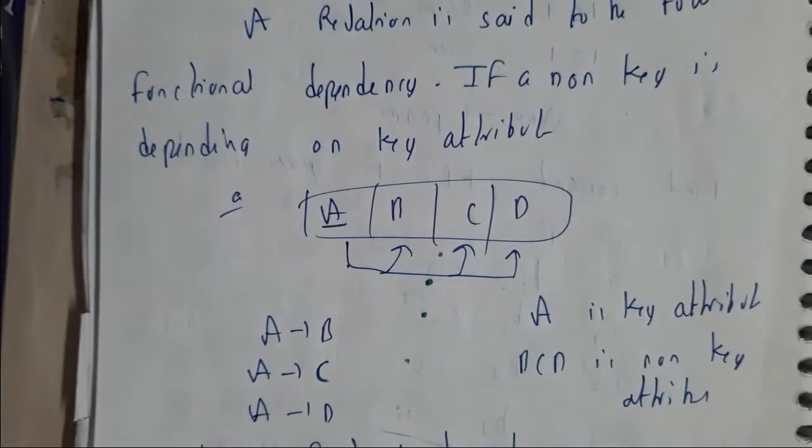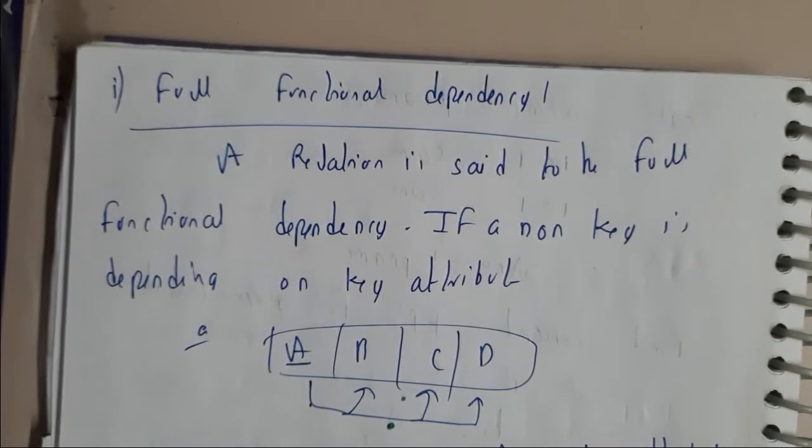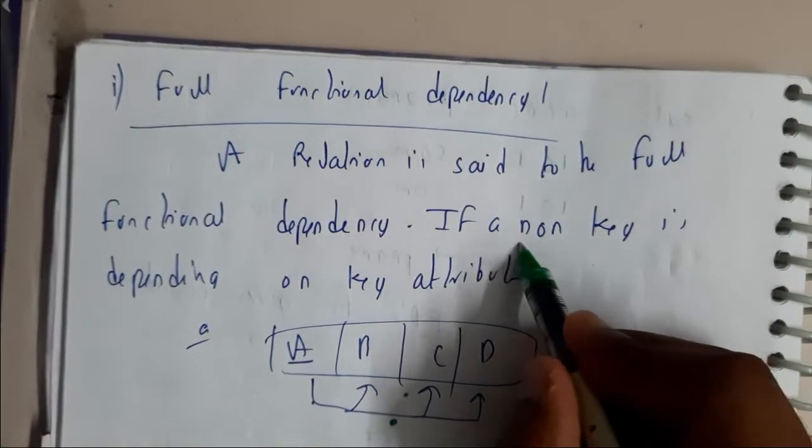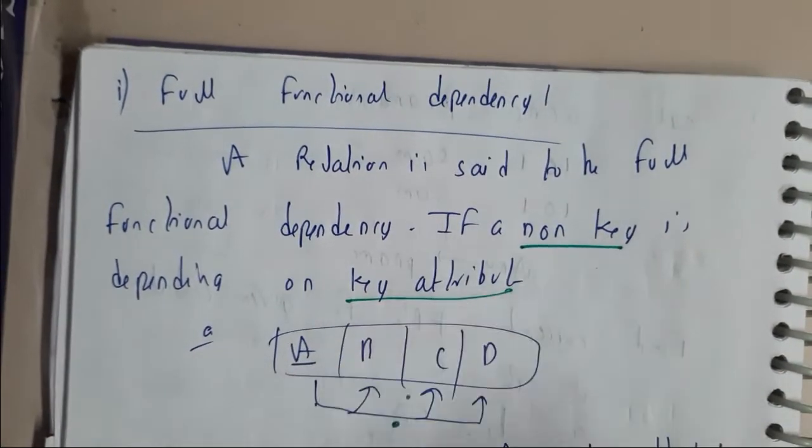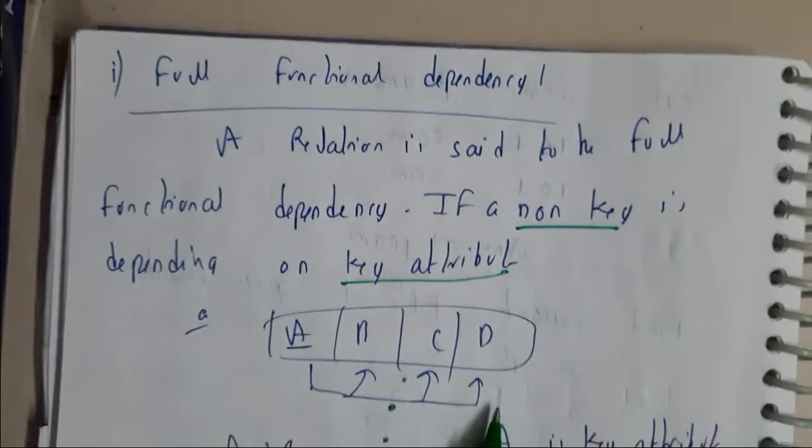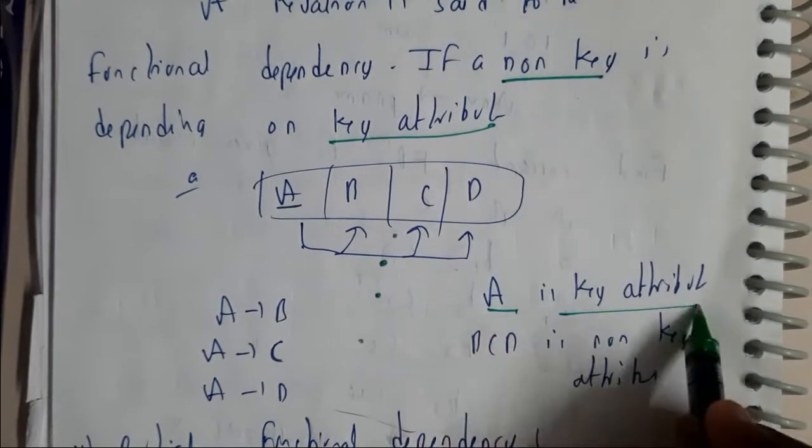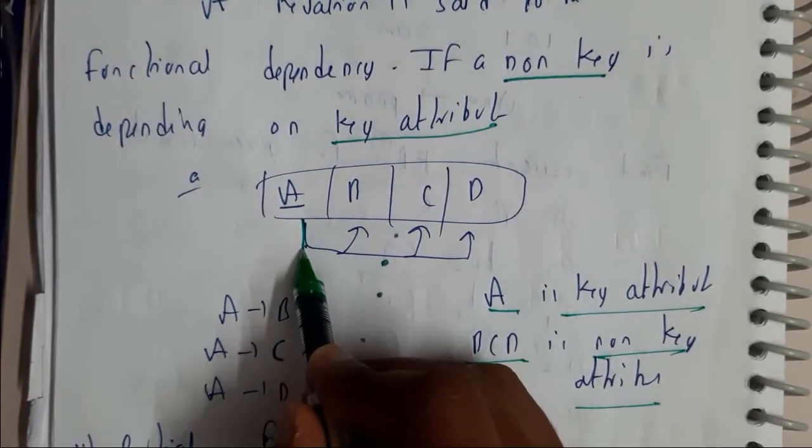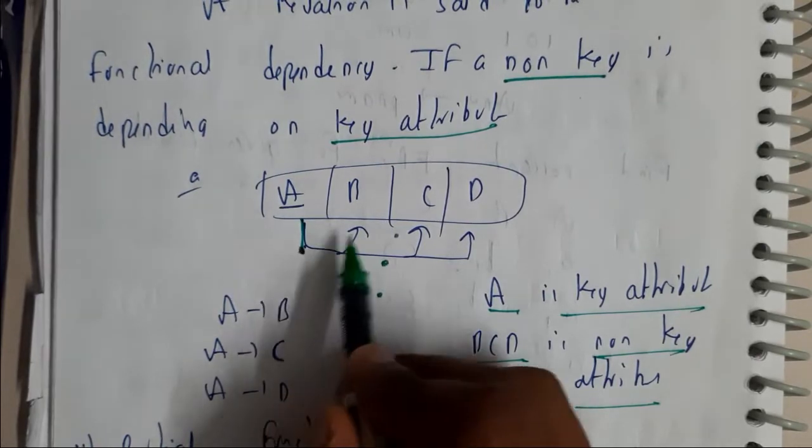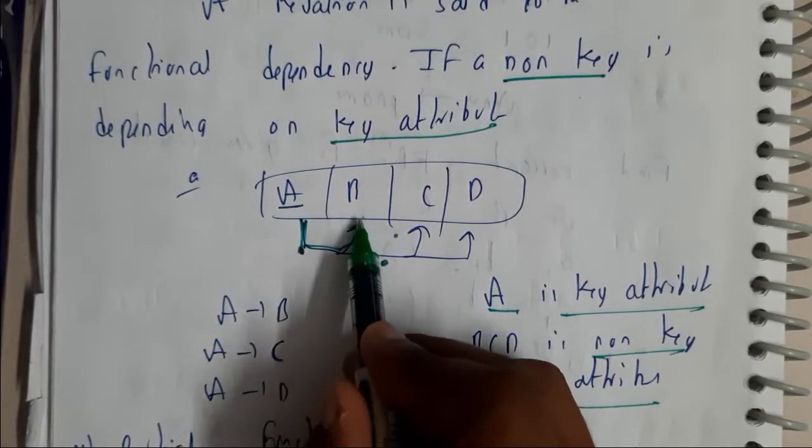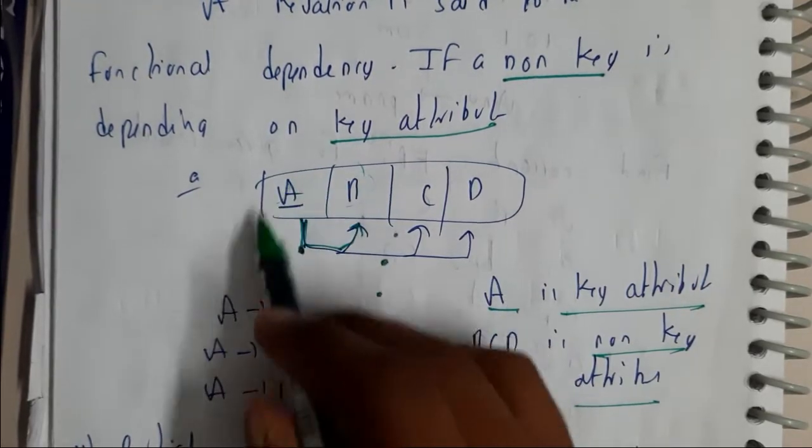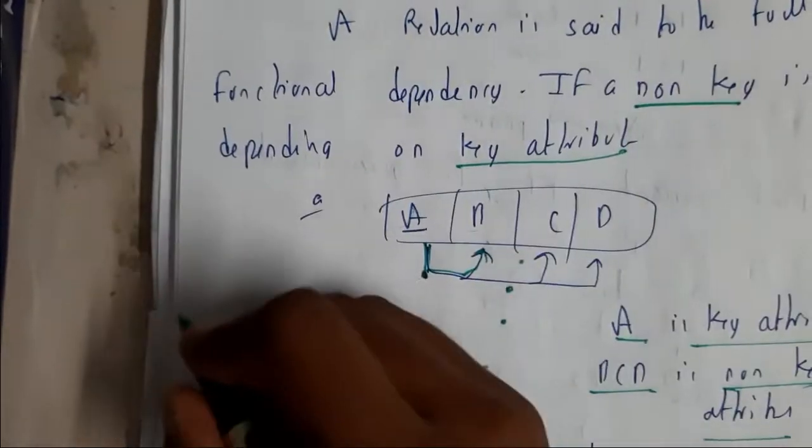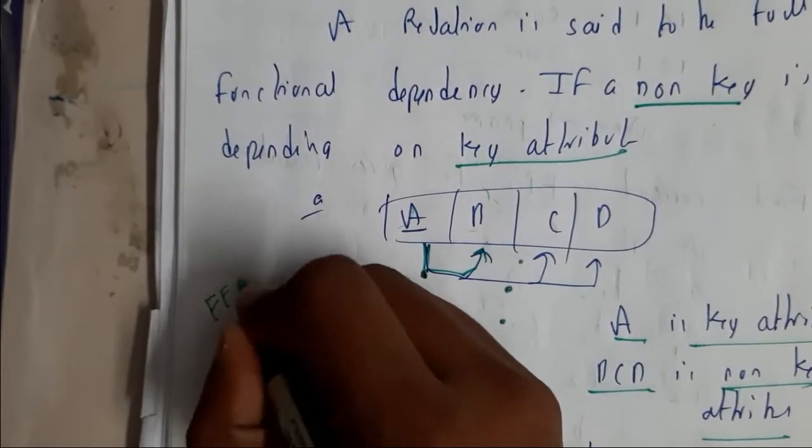Full functional dependency says that a non-key will depend on key. Here we will be assuming the value of A as key and B, C, D as non-keys. So a non-key B is depending on A (A → B). That is nothing but full functional dependency. Remember FFD means non-key depending on key.